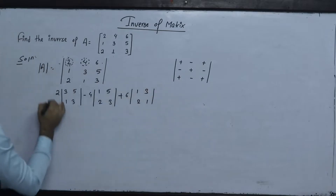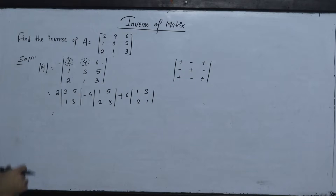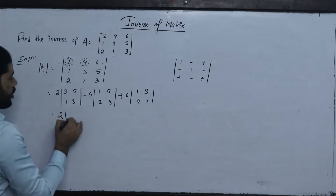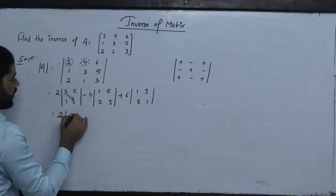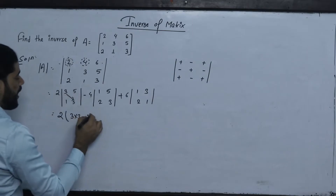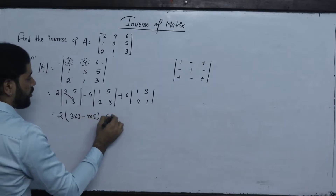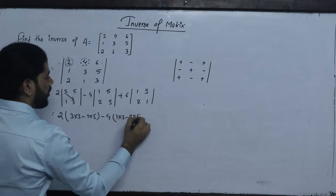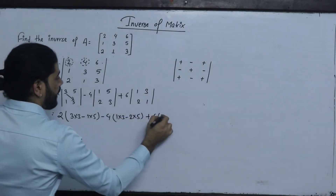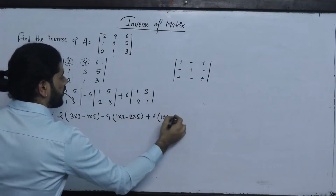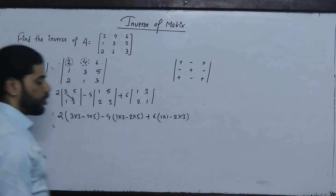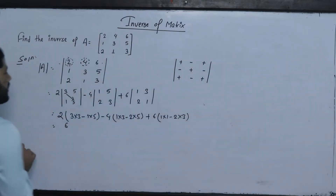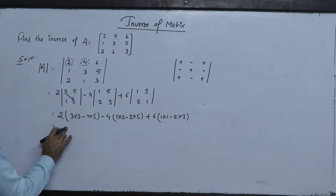Converting to 2 by 2 determinants: 3 into 3 minus 1 into 5, minus 4 times (1 into 3 minus 2 into 5), plus 6 times (1 into 1 minus 2 into 3). Finding the determinant value gives us 6.